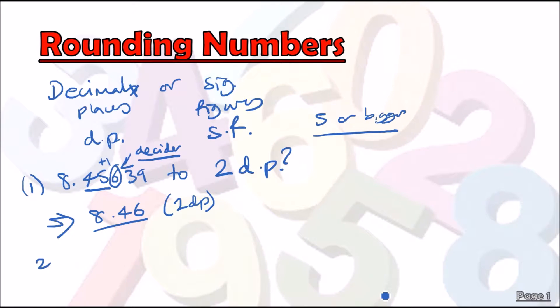However, if the question asked us to round, let's do the same question again but slightly different: 8.35543 to two DP. Well, we look at the first two numbers and now we look at the decider. But this time the decider is less than five. If that's the case, then we just ignore this and 8.35 stays at 8.35. So far so good.